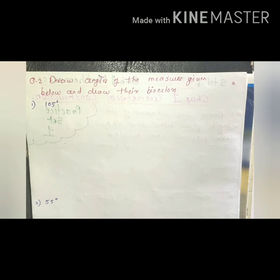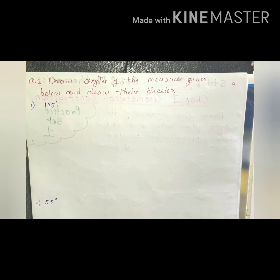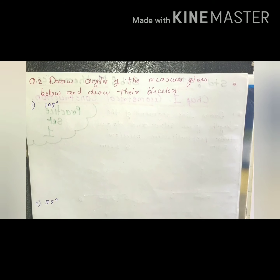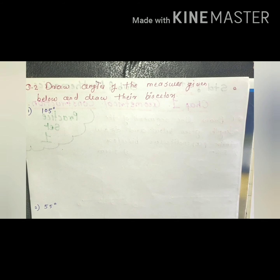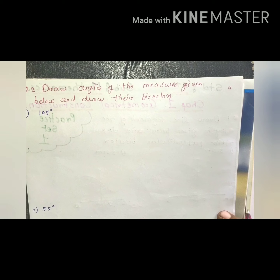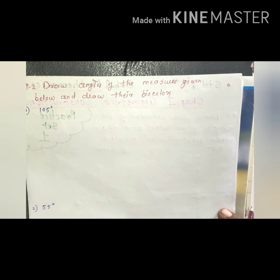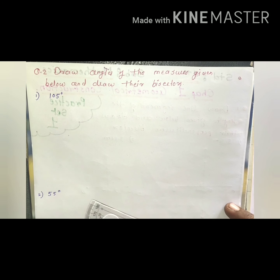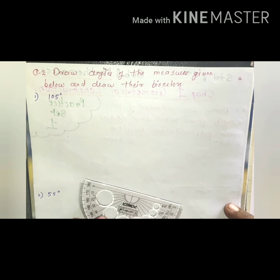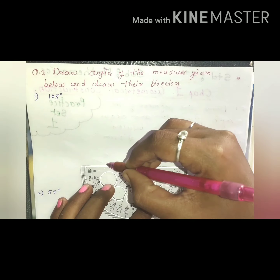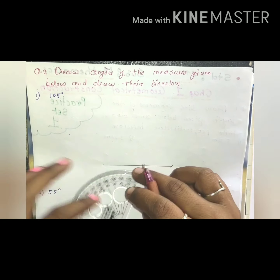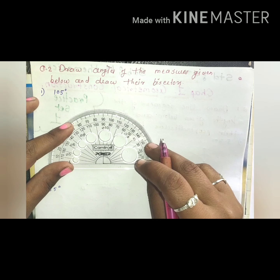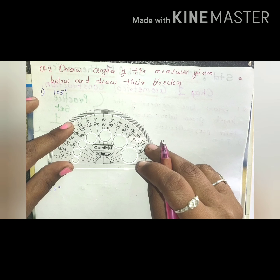Hello students, welcome back to my channel Maths World. In this video we are starting with the practice set of chapter 1, Geometrical Constructions. The first question asks us to draw line segments of the given lengths and draw their perpendicular bisectors — that means we have to draw the line segments and then draw the perpendicular bisector.